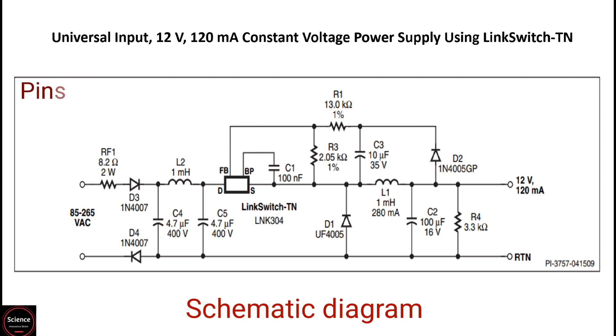Now we will understand pin functional description. This IC has an internal MOSFET, and its drain pin provides internal operating current for both startup and steady state operation. The source pin is the power MOSFET source connection. It also acts as the ground reference for the bypass and feedback pins.